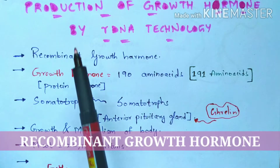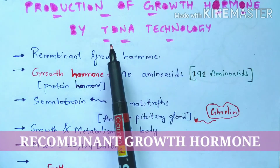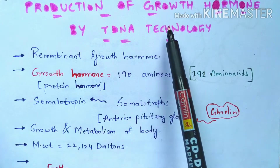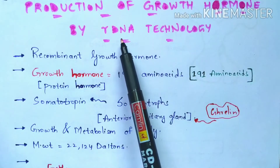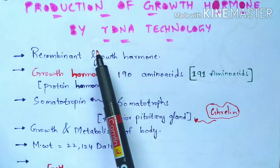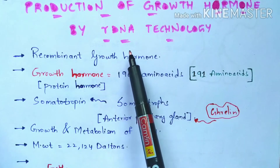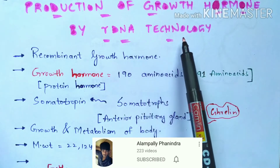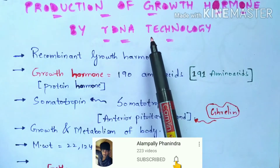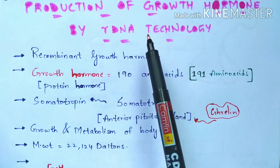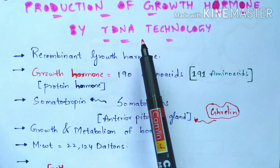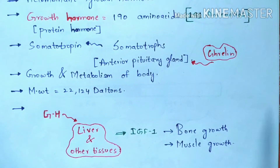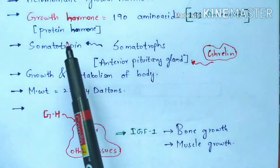In this video I am going to explain the production of growth hormone by recombinant DNA (rDNA) technology. The growth hormone produced using this rDNA technology is called recombinant growth hormone. Before entering the topic, let us first learn what growth hormone is — the introduction — and then I will explain how the recombinant growth hormone can be produced.